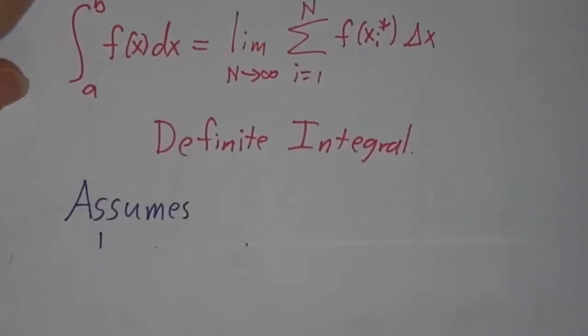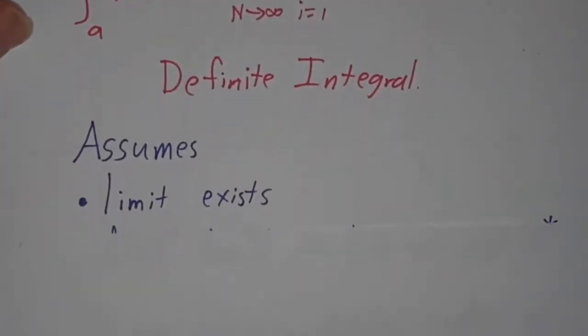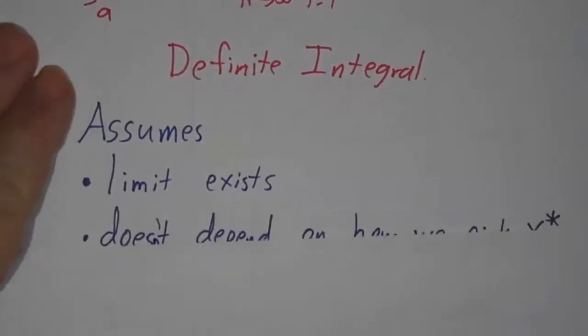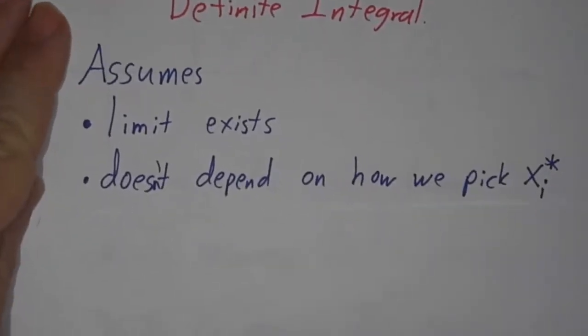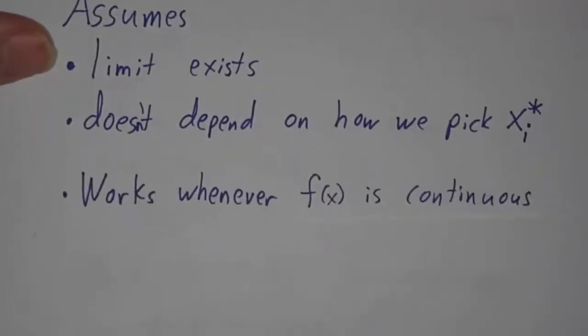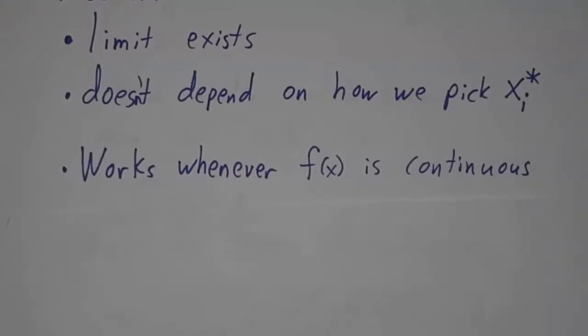Now, that has some assumptions. It assumes that the limit exists. It also assumes that the limit doesn't depend on how we went about picking our representative points. But we're not going to sweat those details, because it turns out that whenever f is continuous, the limit exists and doesn't depend on how you pick those points.